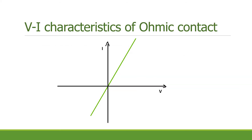The V-I characteristics of an ohmic contact are shown here. We can see that the current through the ohmic contact is a linear function of applied voltage.